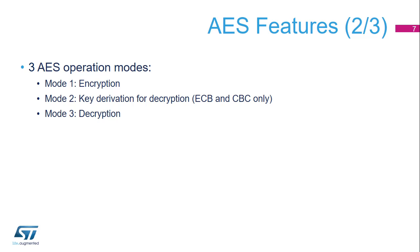Mode 1: plain text encryption. Mode 2: electronic codebook (ECB) or cipher block chaining (CBC) decryption key derivation. It must be used prior to selecting Mode 3 with ECB or CBC chaining modes. This key derivation derives a new key based on the values stored in the AES key registers before enabling the AES accelerator. Mode 3: ciphertext decryption.